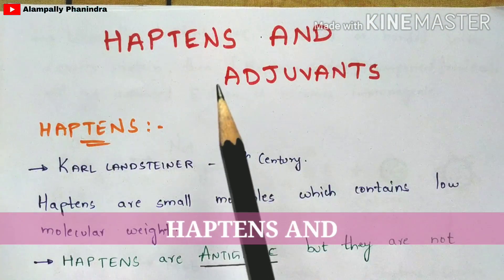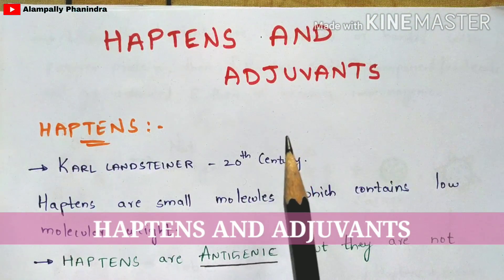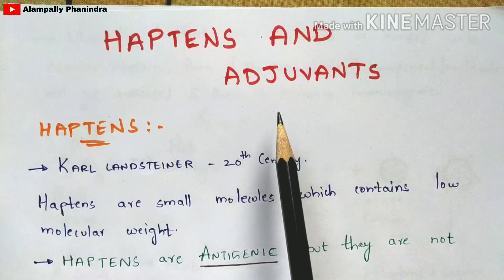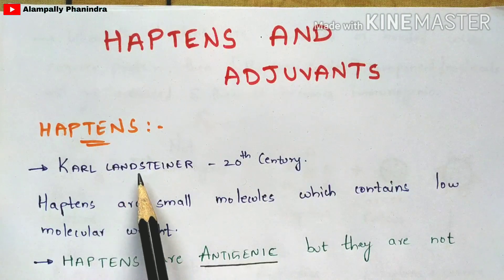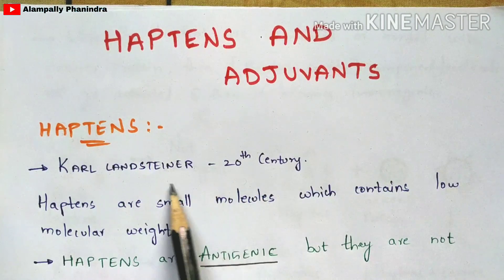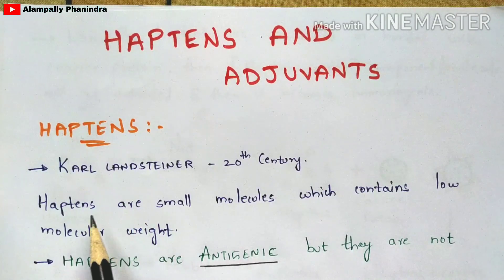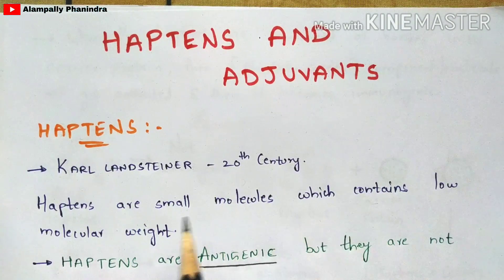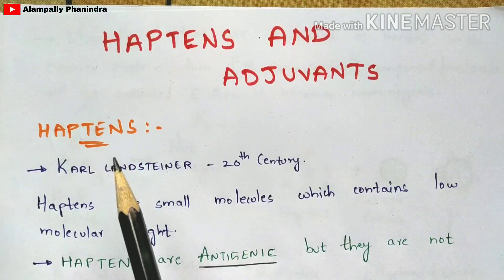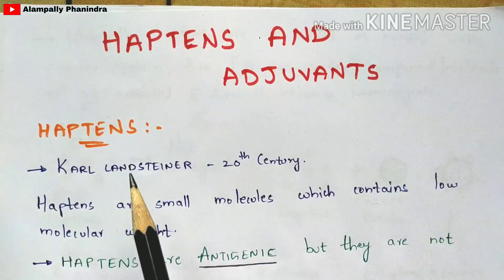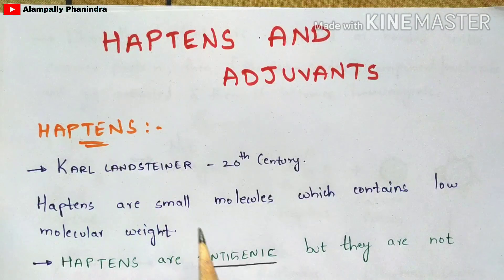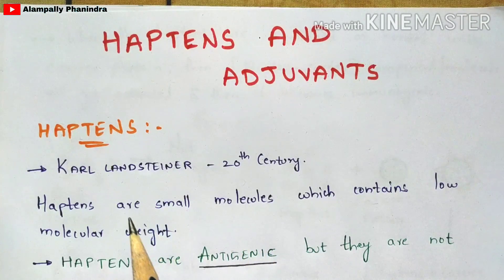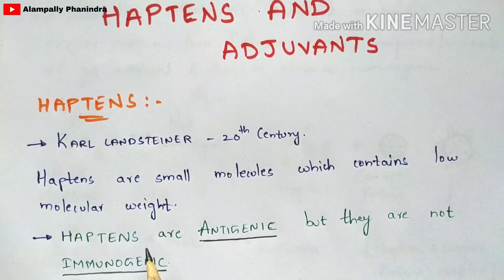In this video let us discuss about haptens and adjuvants. The term haptens was introduced by Karl Lentzner in the 20th century. Haptens are small molecules which contain low molecular weight. You can consider haptens as foreign antigens — they are small in size and their molecular weight is very low.